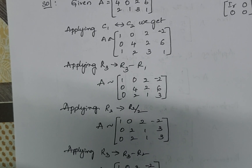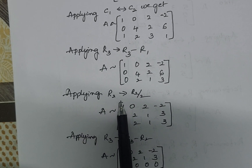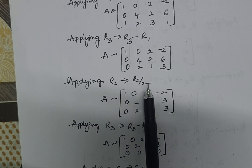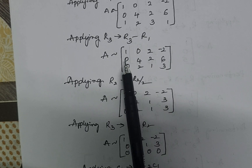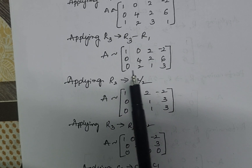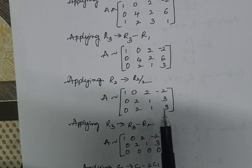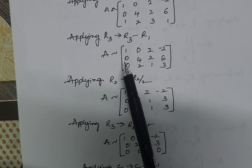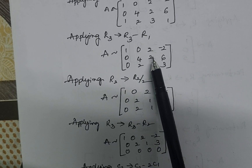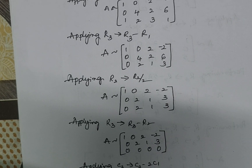Now applying R2 → R2 / 2 — divide the whole second row by 2. The first and third rows remain as they are. The second row becomes: 0, 4/2 = 2, 2/2 = 1, 6/2 = 3.